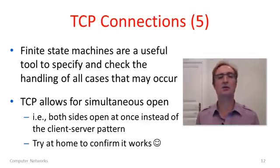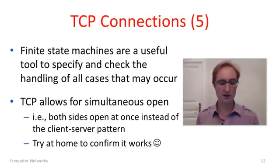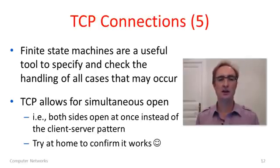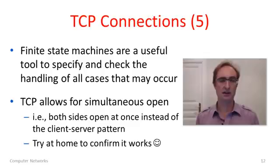Finite state machines are a useful tool for specifying all the different states the client and server can reach and handling all cases. We looked at just one common case, but interestingly the TCP connection state machine also handles the case where the client and server happen to decide to open a connection to one another simultaneously — better described as peer-to-peer rather than client-server. TCP should support any model, even simultaneous open. If you investigate that case in the connection state machine you should find that both sides will go from closed to established. You can try that for yourself at home.